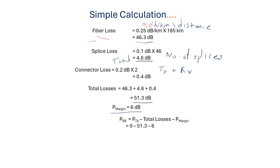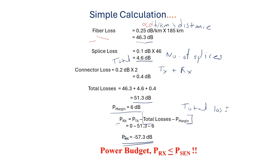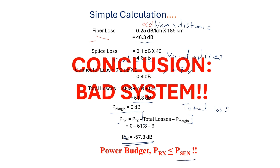The received power PRX equals transmitted power minus total loss. Transmitted power is 0 dBm and total loss including power margin is 57.3 dB, so PRX is minus 57.3 dBm. Always remember: the received power must be greater than or equal to the receiver sensitivity. Since the receiver sensitivity is minus 28 dBm and our received power is minus 57.3 dBm, this is a bad system.